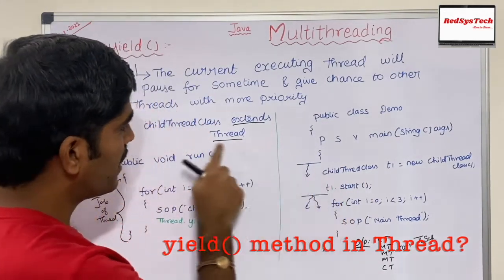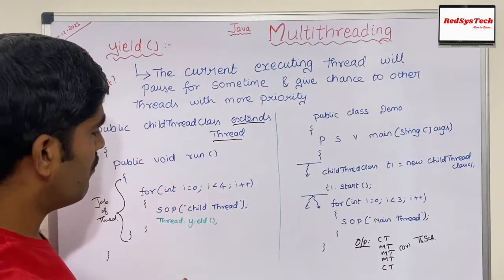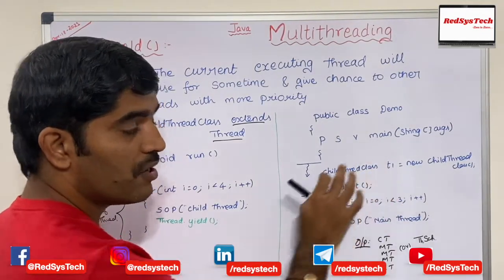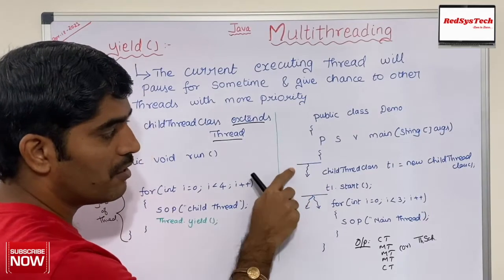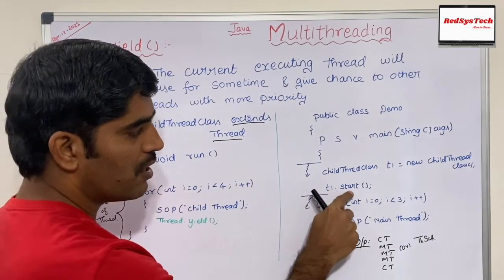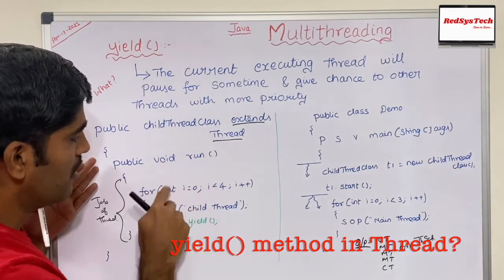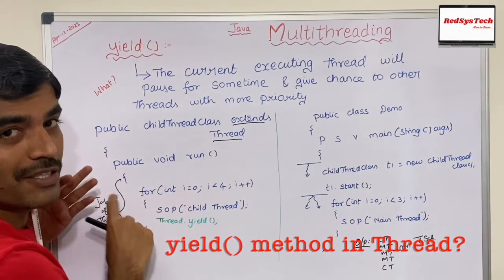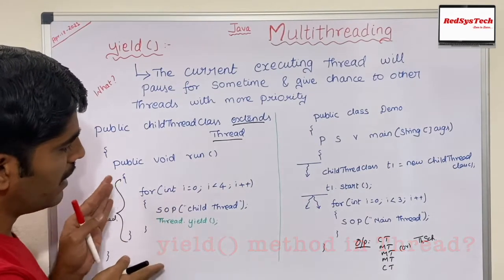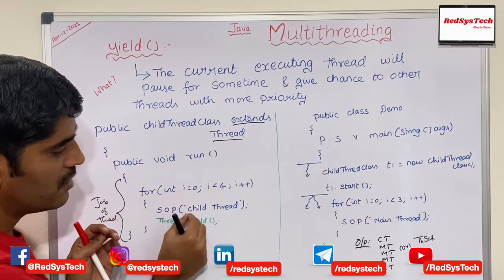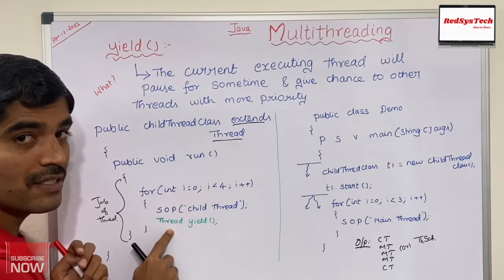In the main class, inside the main method, we create an object of the ChildThread class: ChildThreadClass t1 = new ChildThreadClass(). Then we call t1.start(). These two lines are executed by the main thread. When you call t1.start(), it internally calls the run method that we overrode — and inside the run method we have a for loop that runs four times, printing 'child thread'.